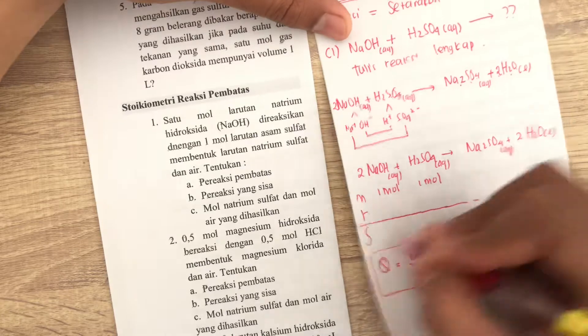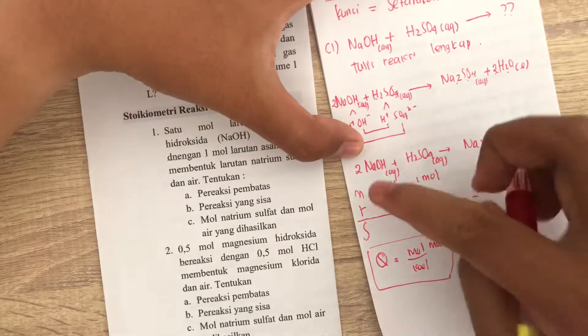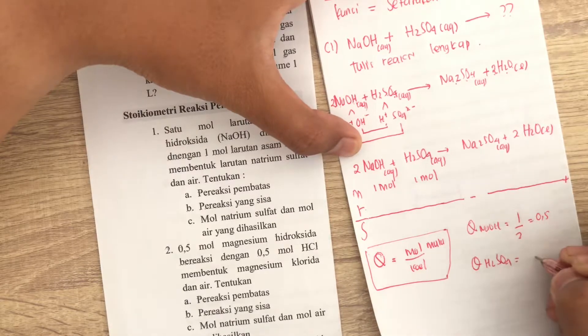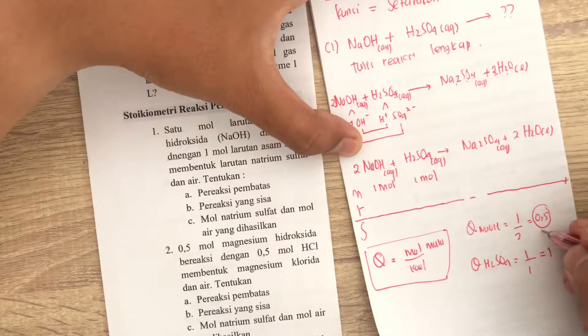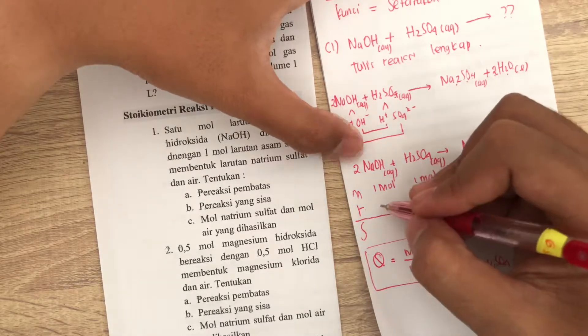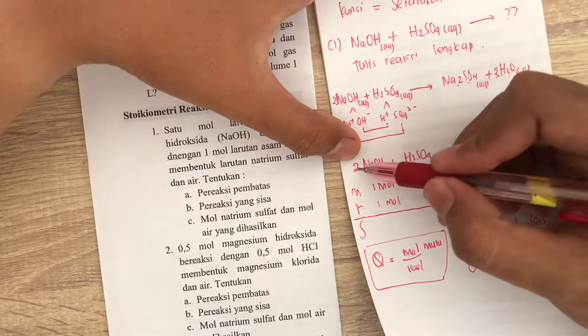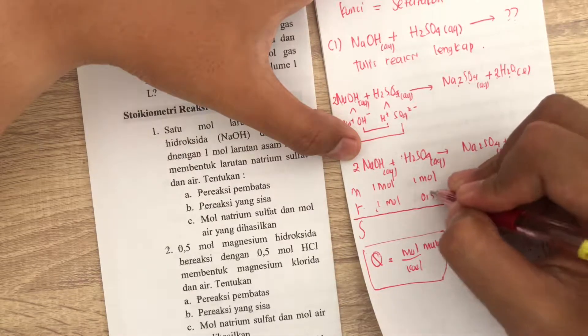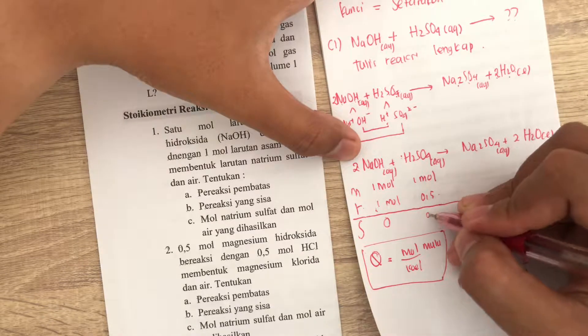Kalau Q-nya NaOH, berarti dia adalah 1 dibagi dengan 2 koefisiennya. Berarti jadi 0.5, sedangkan Q-nya H2SO4, berarti dia adalah 1 dibagi dengan 1. Berarti adalah 1. Mana yang kecil? Ini adalah yang kecil. Berarti ini otomatis jadi pereaksi pembatas. Berarti otomatis karena NaOH pereaksi pembatas, berarti disini 1 mol habis. Baru deh. Kalau 2 nilainya 1, berarti ini kan koefisiennya 1. 1 nilainya adalah 0.5. Setuju nggak? Berarti ini kan habis 0. Ini 1 kurang 0.5, ini jadi 0.5 mol.